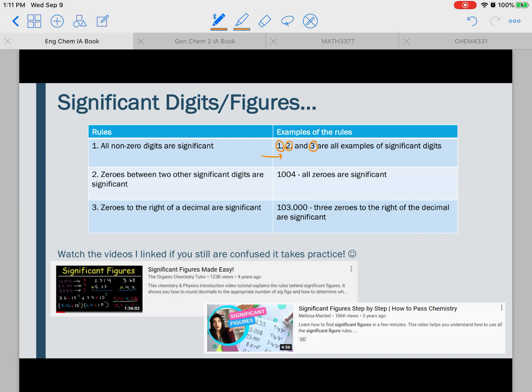The second rule is that zeros between two other significant digits are significant. So an example of this would be 1004, and because the one and the four are significant, and the zeros are in between them, that means that every single one of these is going to be considered a significant digit. So here, we're going to have four total sig figs.